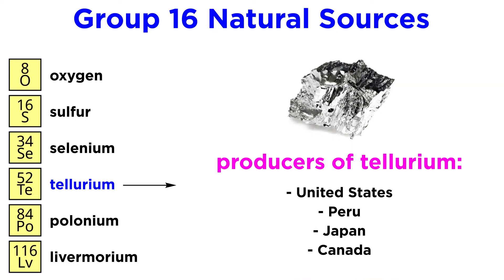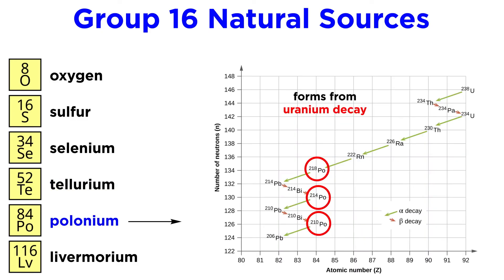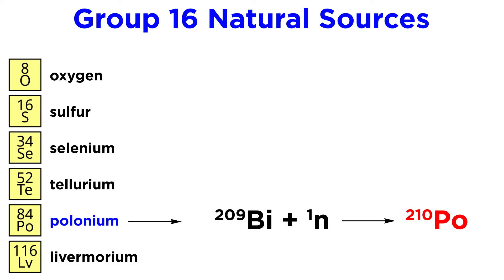The biggest producers of tellurium are the United States, Peru, Japan, and Canada. Polonium, as we mentioned, is highly radioactive, forming naturally from uranium in uranium ores, and can also be made artificially by bombarding bismuth-209 with neutrons.